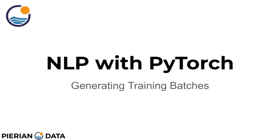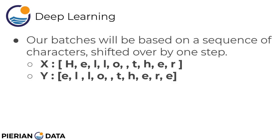Welcome back everyone. In this lecture we're going to cover how to generate training batches for NLP with PyTorch. We're creating a function that will generate batches of characters along with the next character in the sequence as the label. This is slightly different than what we've done in the previous section with recurrent neural networks. Our batches will be based on a sequence of characters shifted over by one step — so if we had a training sequence X of the characters 'hello THER', the label would be that sequence shifted over by one time step, starting at 'ELLO' and completing there.